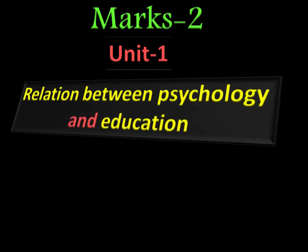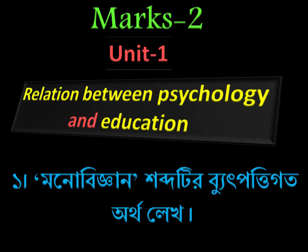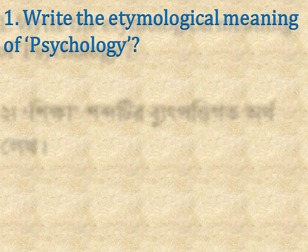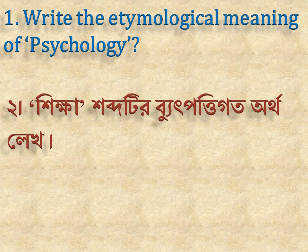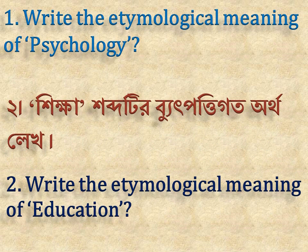The first unit, Unit One, is the relation between psychology and education. Let's look at the two-mark questions. The first one is the 'monobigyajan shabdati.' Let's look at the English medium. Number 1: Write the etymological meaning of psychology. Number 2: Write the etymological meaning of education.